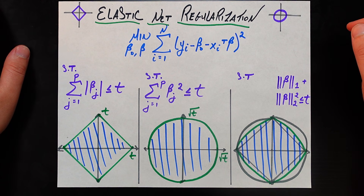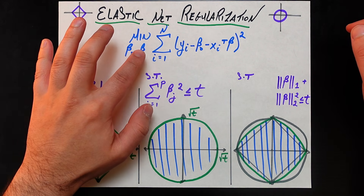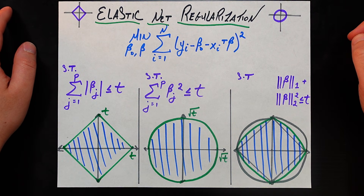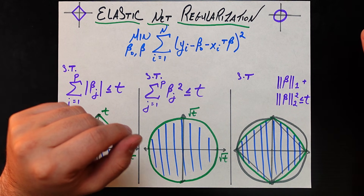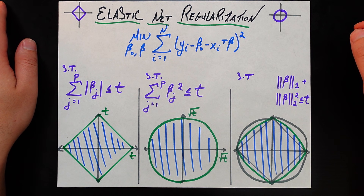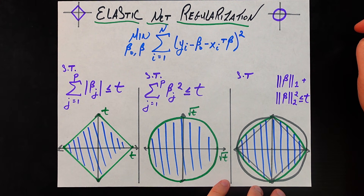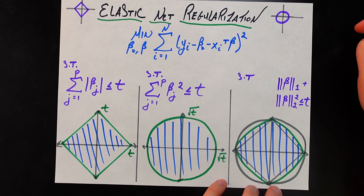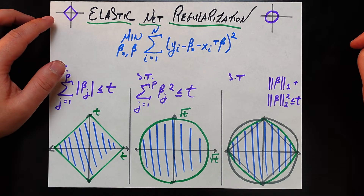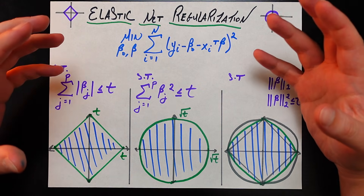In the ordinary least squares problem we are trying to find some betas: our intercept beta-naught and all of our coefficients beta, which is a vector of beta-1, beta-2, and so on, applied to x1, x2, and so on. We want to minimize the residual sum of squares, which is the sum over all n data points of the true value yi minus the estimated value beta-naught plus xi-transpose times beta, squared.